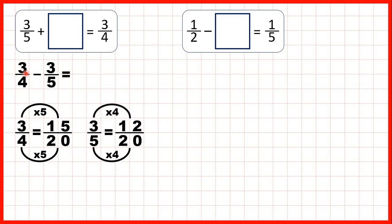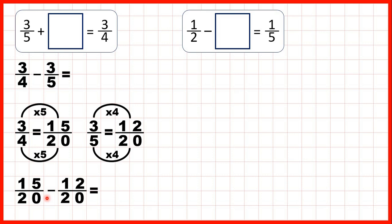So now we can rewrite our question. Instead of 3 quarters we write 15 twentieths, and instead of subtracting 3 fifths we subtract 12 twentieths. Now we have a common denominator, so that stays the same in our answer, and 15 minus 12 is 3, so our answer is 3 twentieths.